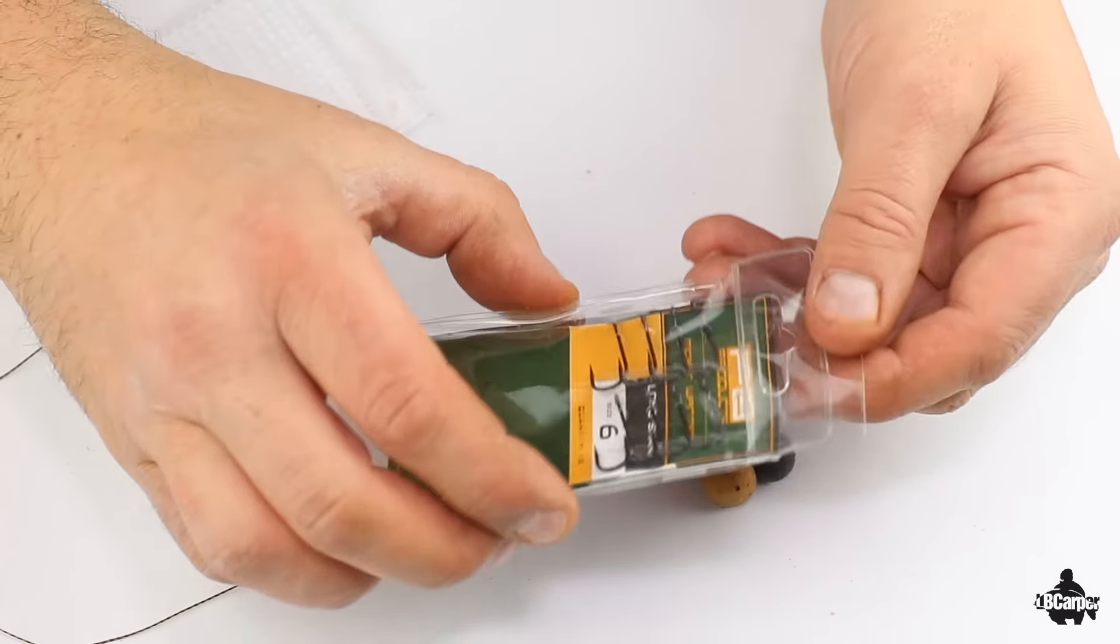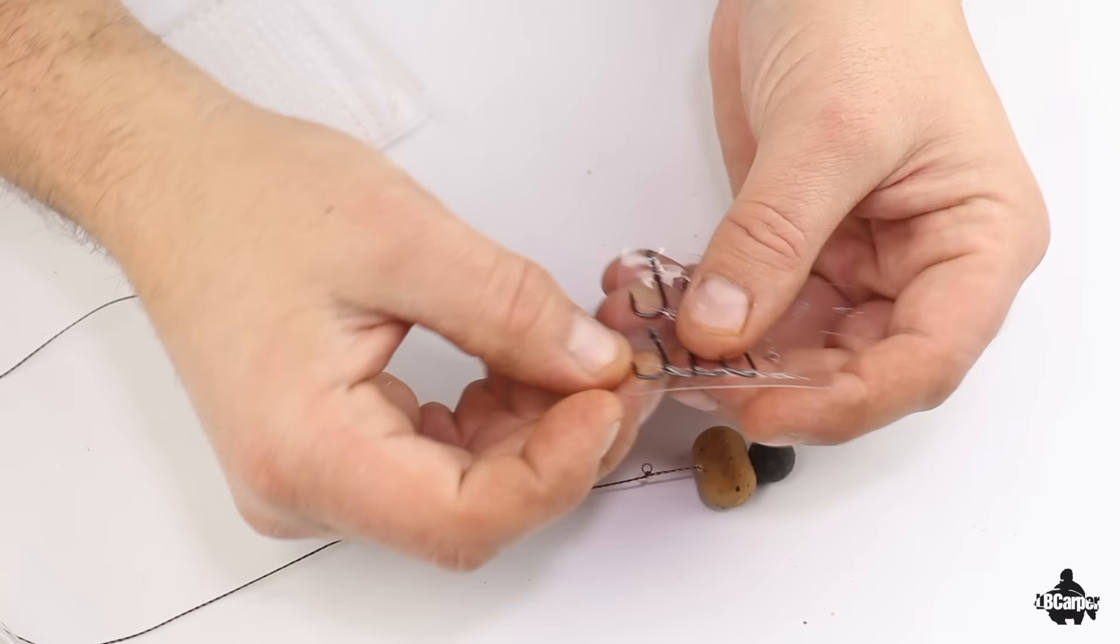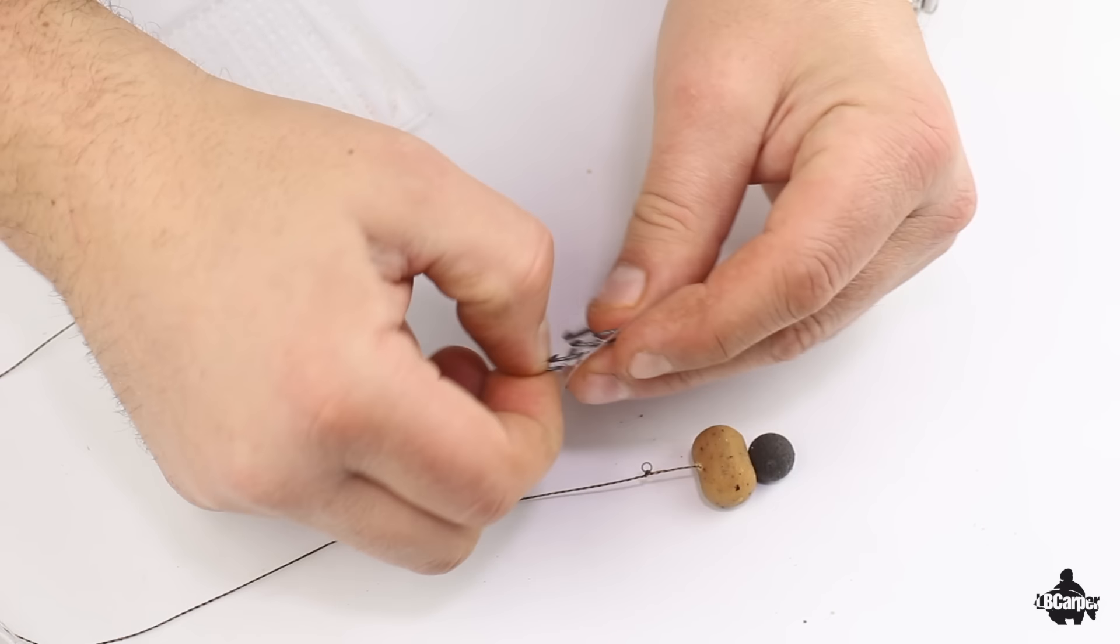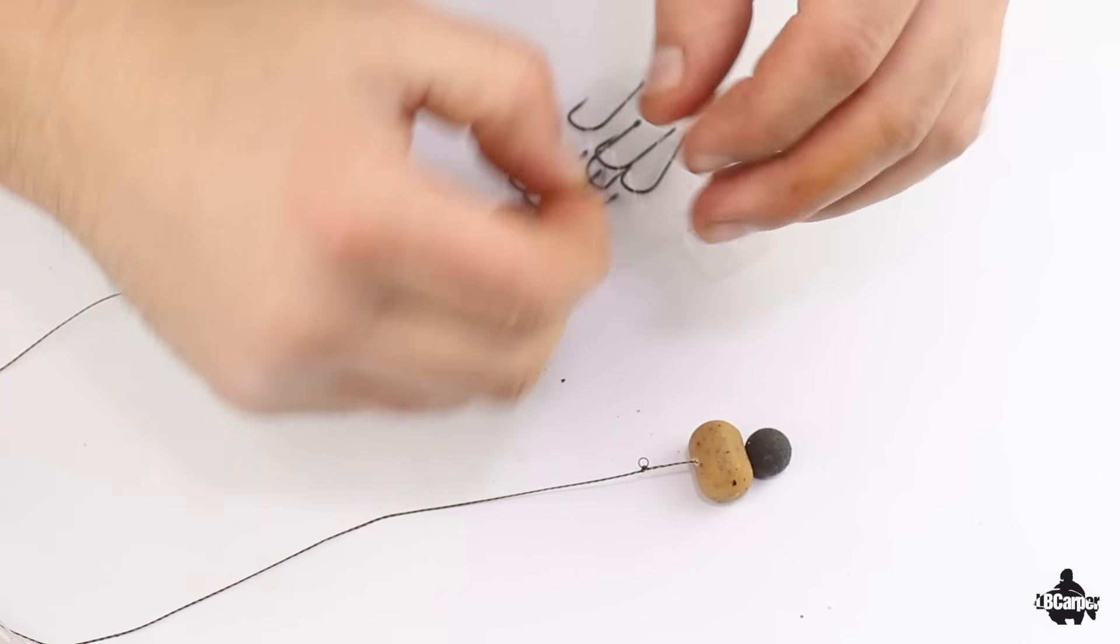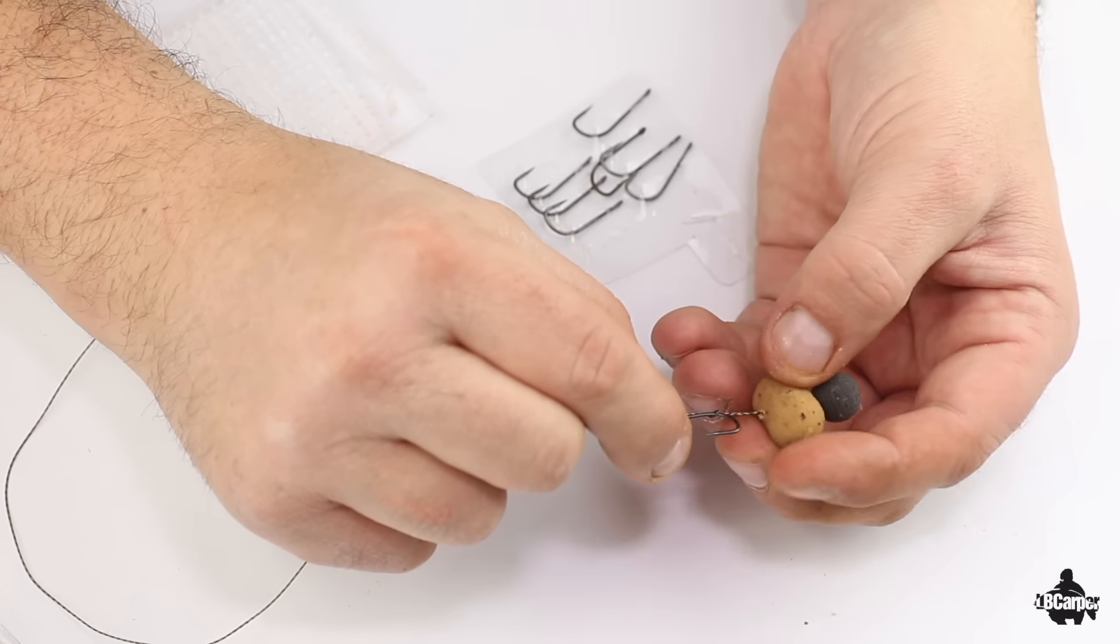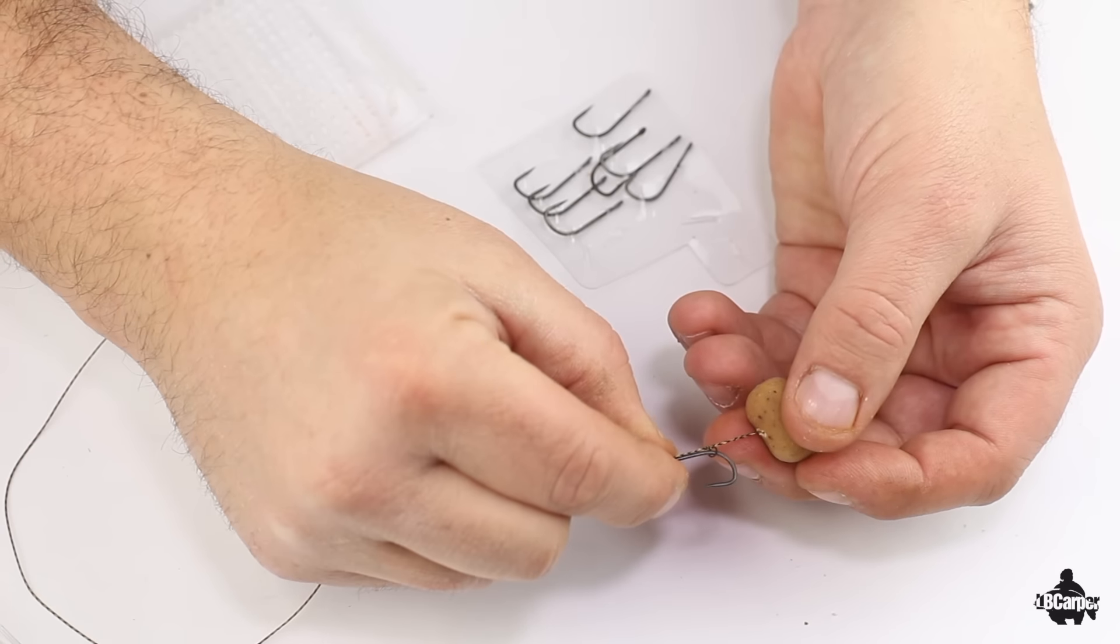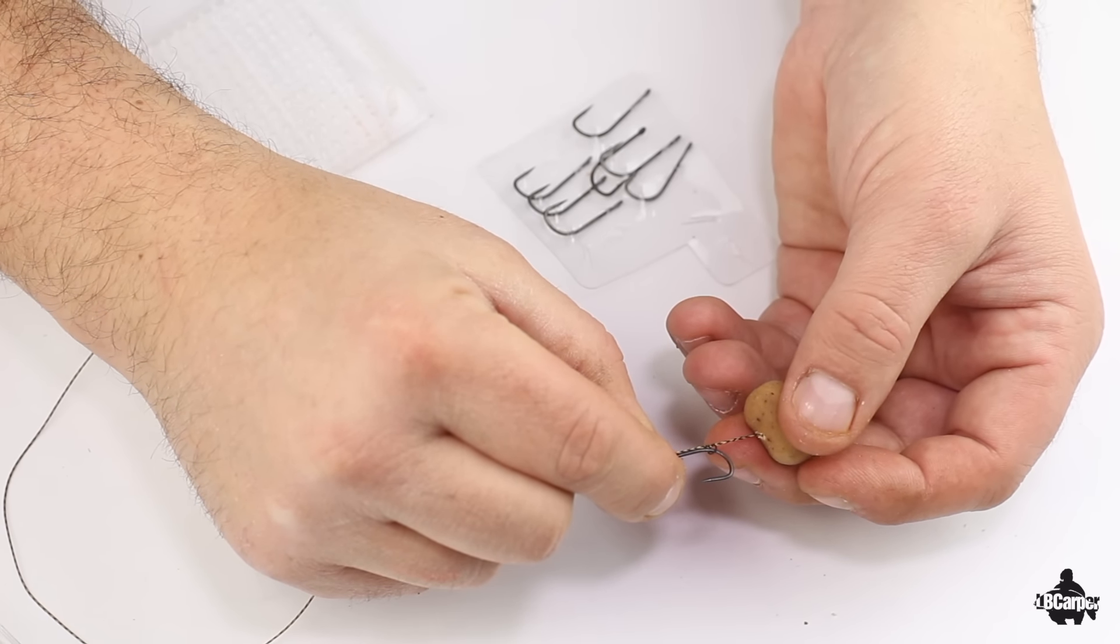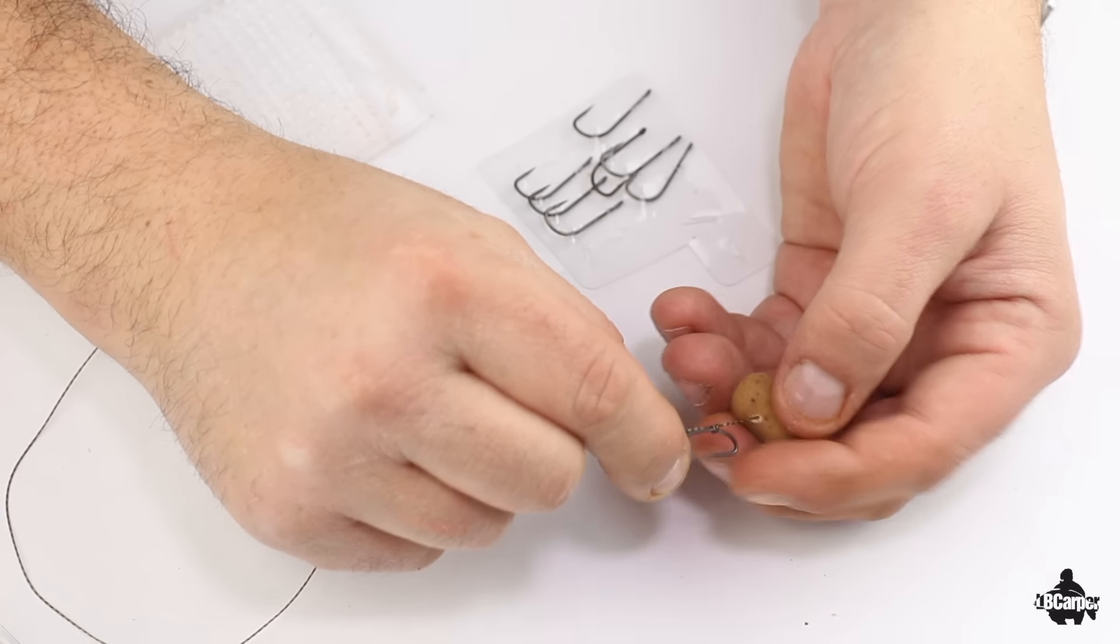We take a long shank hook. So it's just on, you want to position that just on the bend of the hook.